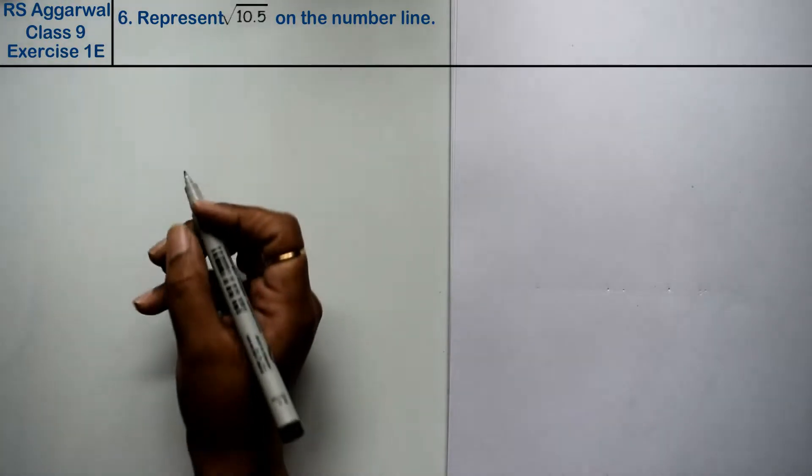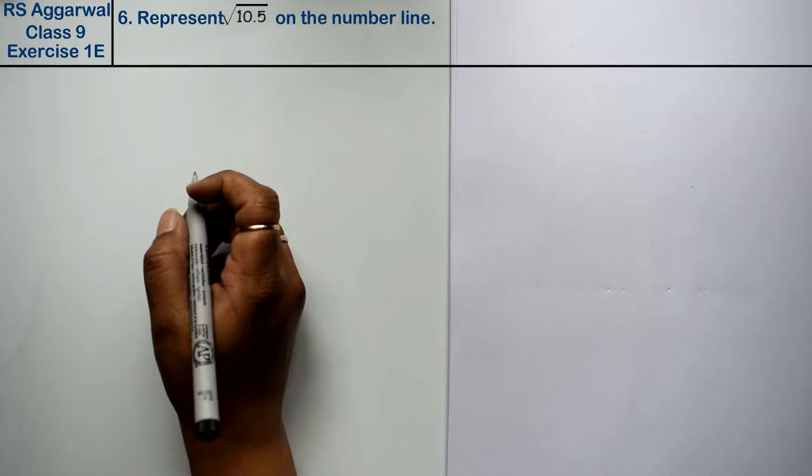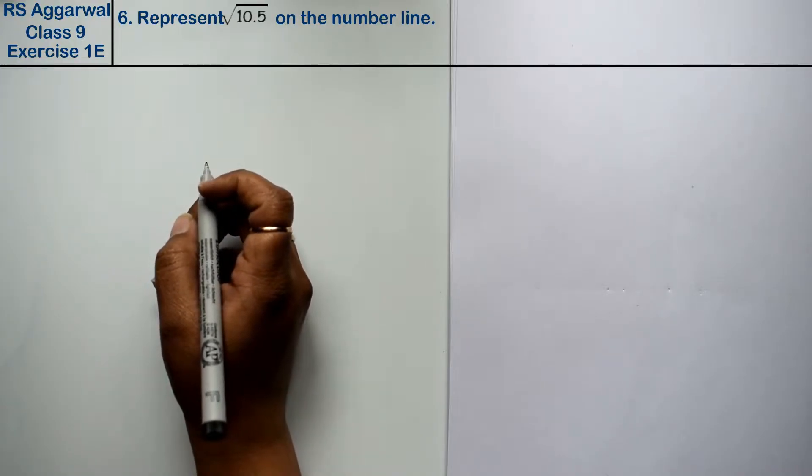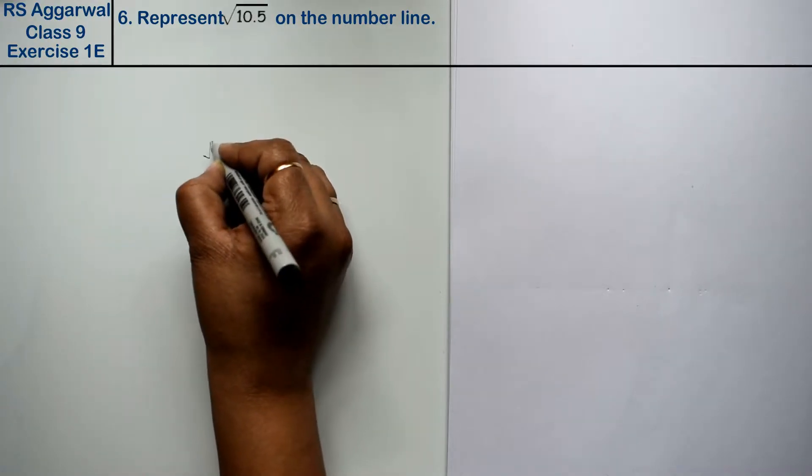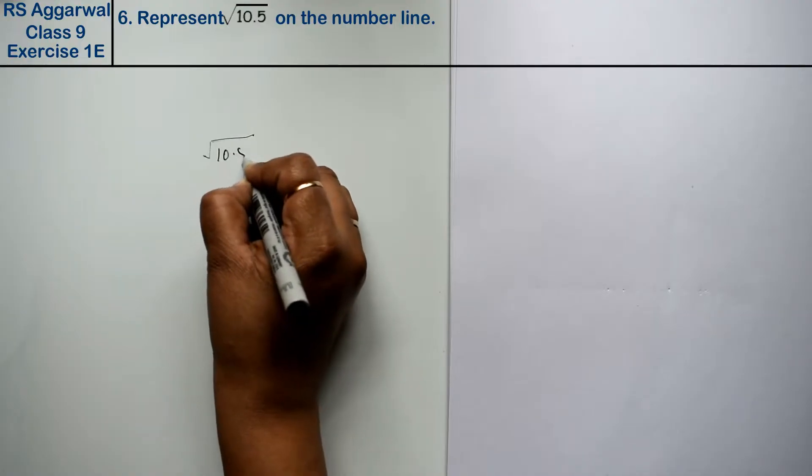Let's do question number 6 of exercise 1E, that is number system. Question number 6 is represent root 10.5 on a number line.